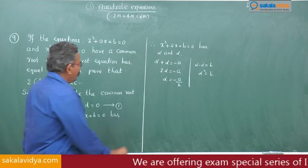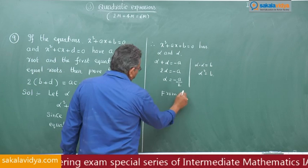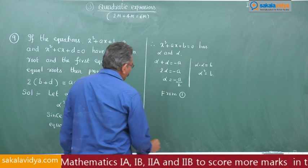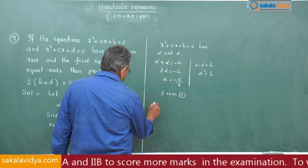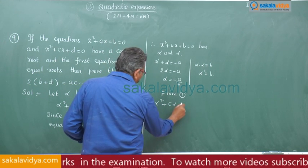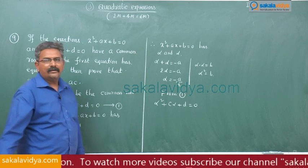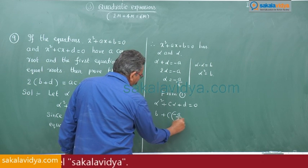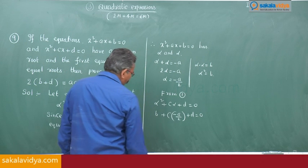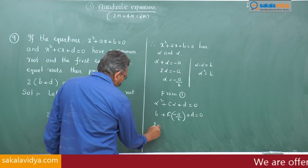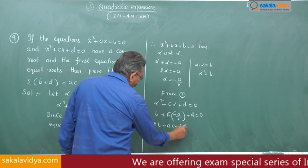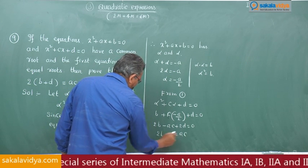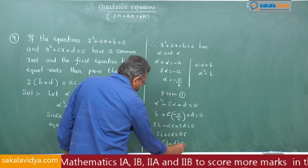Now from equation 1, replace alpha square with B and alpha with minus A by 2. So alpha square plus C alpha plus D is equal to 0. Replacing: B plus C into minus A by 2 plus D is equal to 0. Multiply with 2: 2B minus AC plus 2D is equal to 0. Therefore 2B plus 2D is equal to AC. Taking 2 common: 2 into B plus D is equal to AC.